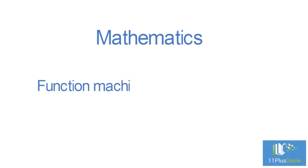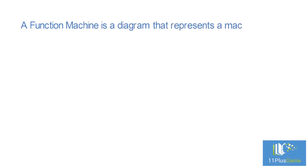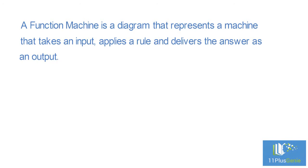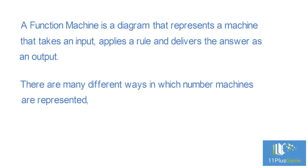Function machines, or number machines. A function machine is a diagram that represents a machine that takes an input, applies a rule, and delivers the answer as an output. There are many different ways in which number machines are represented, but the basic principles stay the same.